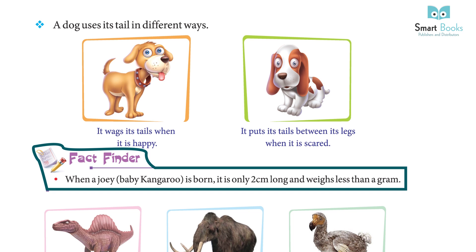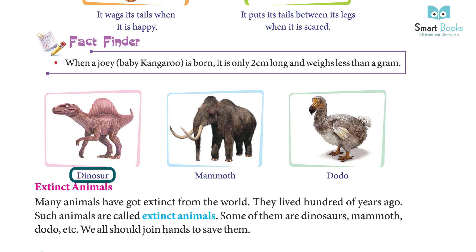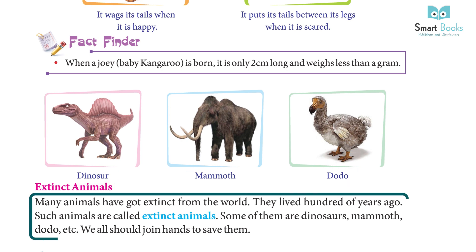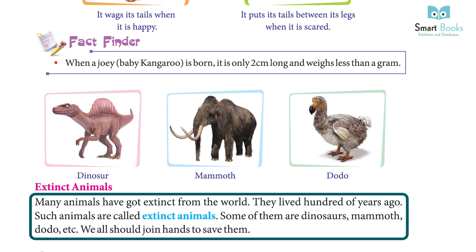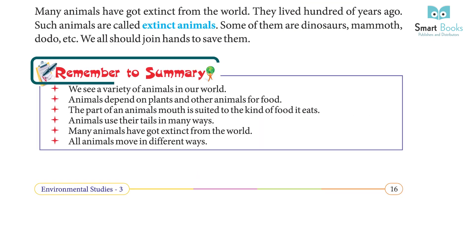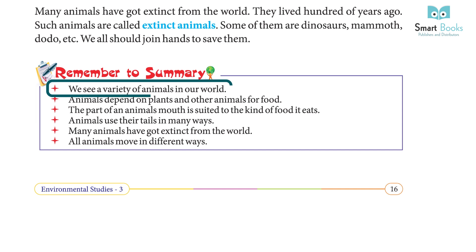Many animals have gone extinct from the world — they lived hundreds of years ago. Such animals are called extinct animals. Some examples are dinosaurs, mammoths, and the dodo. We should all join hands to save animals.